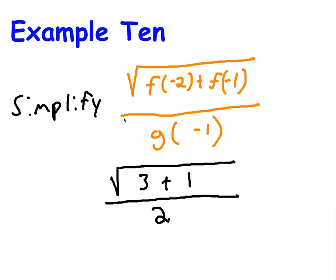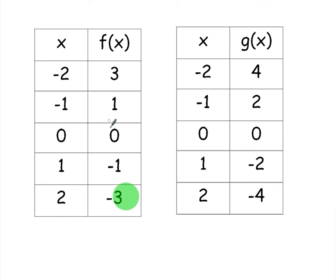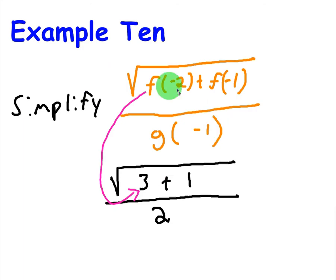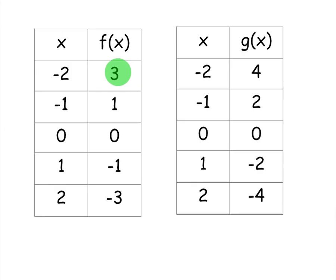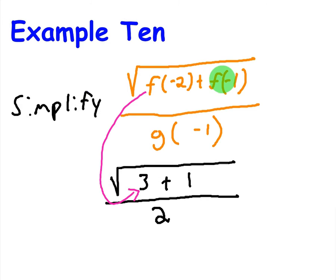Let's look at one that's a little bit more advanced than that. This says simplify the square root of f of negative 2 plus f of negative 1 all divided by g of negative 1. Again, you're just going to look at the chart and replace f of negative 2 with what it is. So if you look at the chart, you see that f of negative 2 is 3, so you're going to replace f of negative 2 with 3. What about f of negative 1? f of negative 1 is 1, so you're going to replace f of negative 1 with 1.